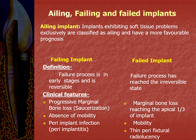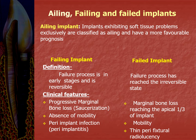What is ailing, failing, and failed implants? Ascari classified implants into three types. An ailing implant exhibits soft tissue problems and has a more favorable prognosis. A failing implant is progressively losing its bone anchorage but is still clinically stable; the failure process is in early stages and reversible, with clinical features of progressive marginal bone loss, absence of mobility, and peri-implantitis. A failed implant has reached the irreversible stage — implant with mobility, excessive bone loss greater than 70%, marginal bone loss reaching the apical third of the implant, and thin peri-fixtural radiolucency.